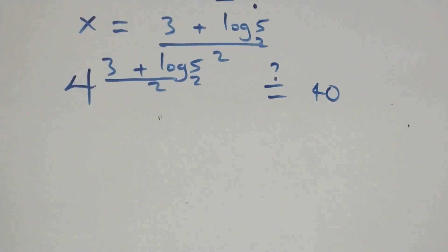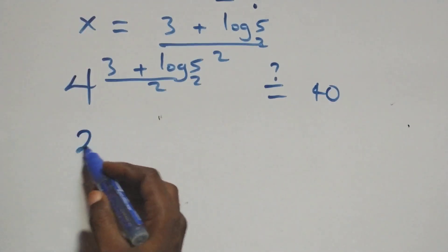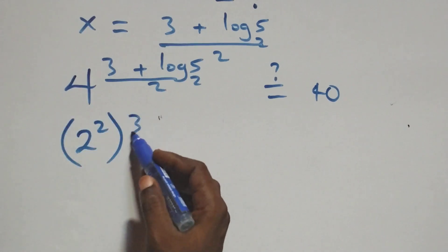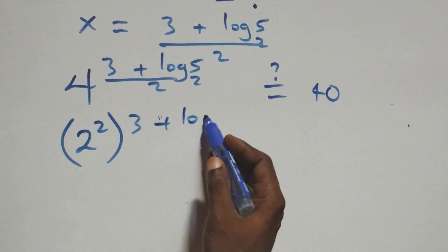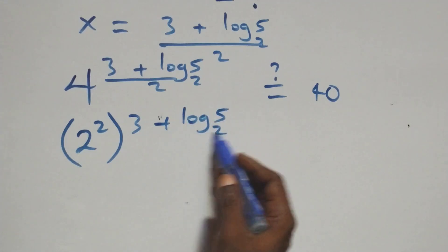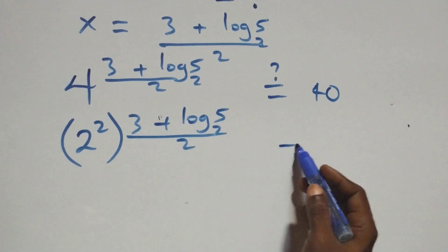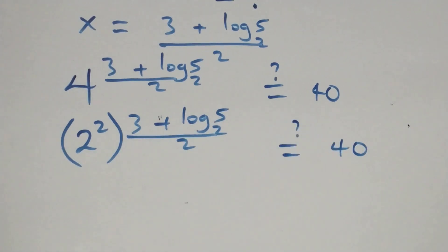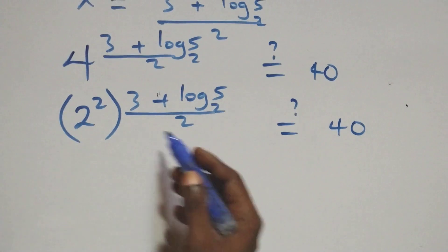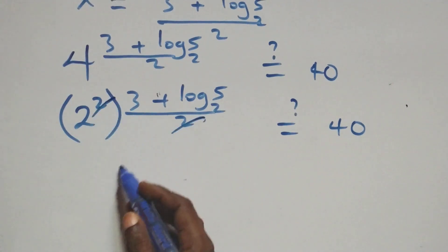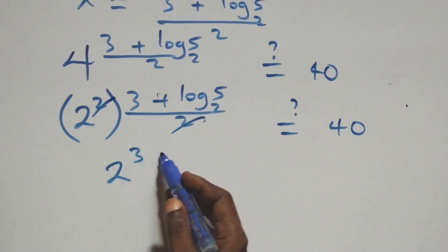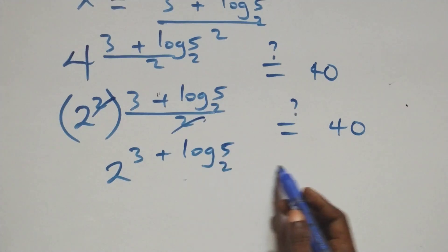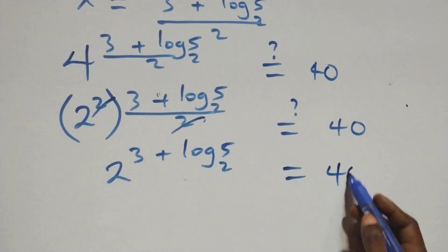We can express four as two squared, raised to the power of three plus log five to base two, all over two. The twos in the exponent cancel, giving us two raised to the power of three plus log five to base two, equals forty.